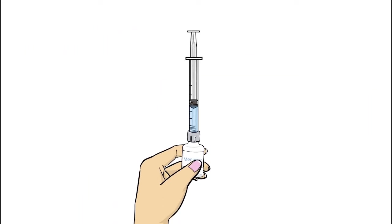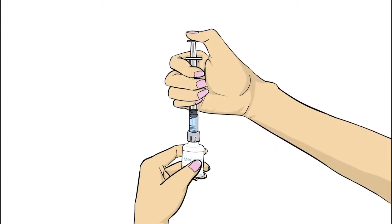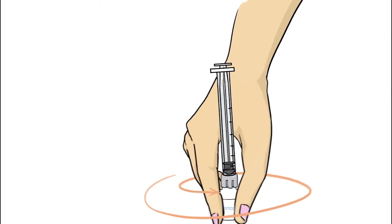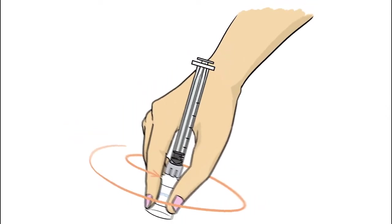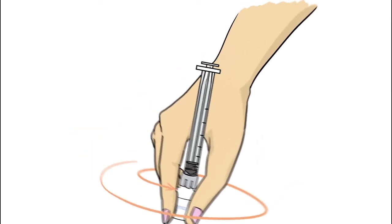Slowly push down on the syringe plunger to inject the reconstituted Menopur into the new vial with the Menopur powder. While keeping the syringe attached to the vial, gently swirl the vial until the Menopur powder is completely dissolved.